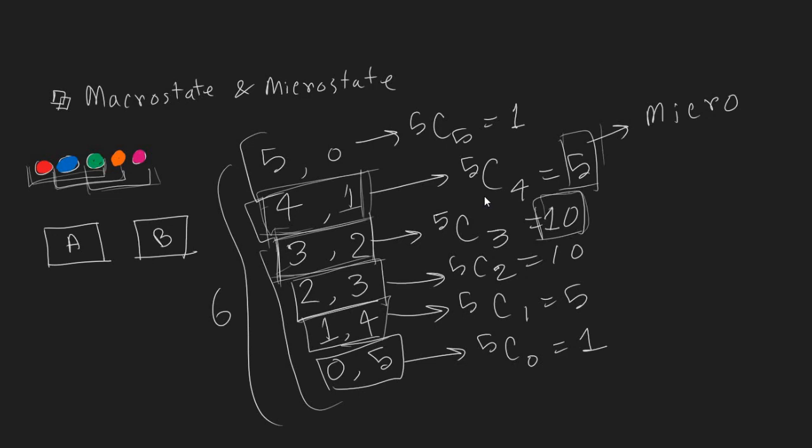We can say each macrostate has its own microstates. If we add all the microstates together, in this case, we are getting 32 total microstates.